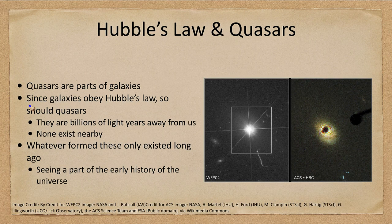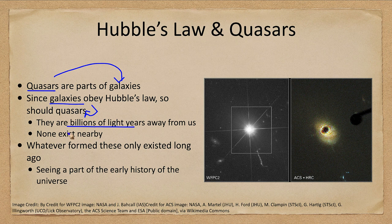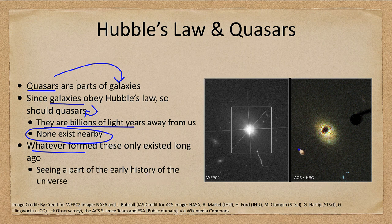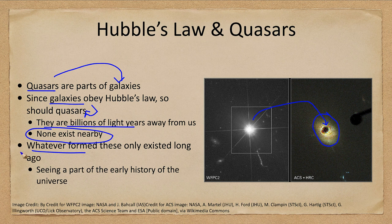Quasars are a part of galaxies. Since galaxies obey Hubble's law, so do quasars, meaning they are billions of light years away from us and none exist nearby. Whatever formed these only existed long ago, and we are seeing part of the early history of the universe. If we want to see the surrounding galaxy, we have the central quasar, and if we mask that out we can see the faint surrounding galaxy, which is otherwise invisible and overwhelmed by the brightness of the central core.